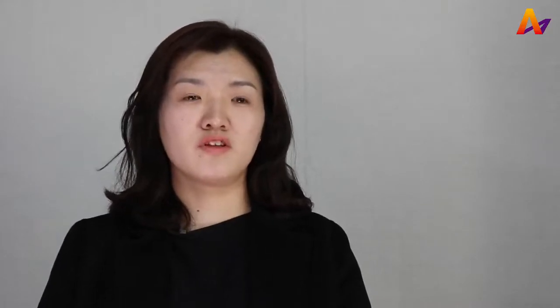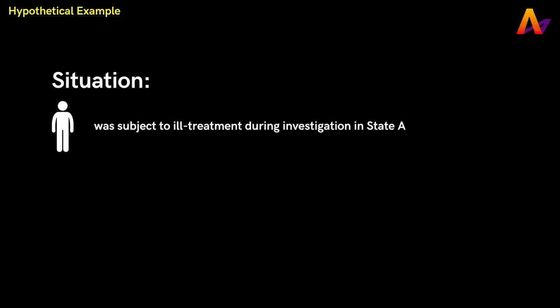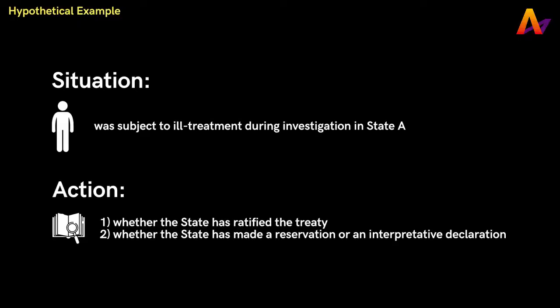The question could be rephrased: what kinds of rights are protected under international law, and how do you assess a state party's compliance with international law? First, we want to have a clear understanding of the facts and define the issue. Next, we need to identify the source of law that applies. For example, let's say we identify a situation where a person was subject to ill-treatment during investigation in state A and want to know whether it constitutes torture under international law. To figure out which law applies, the first thing to do is to ascertain whether the state has ratified the relevant treaty. It is also necessary to check whether the state has made a reservation or an interpretive declaration at the time of ratification.